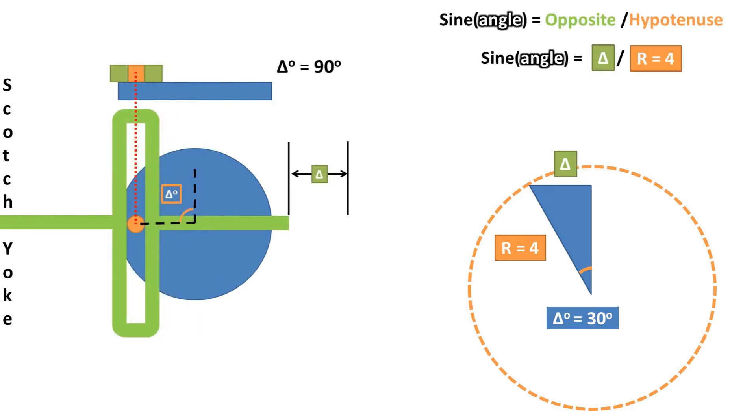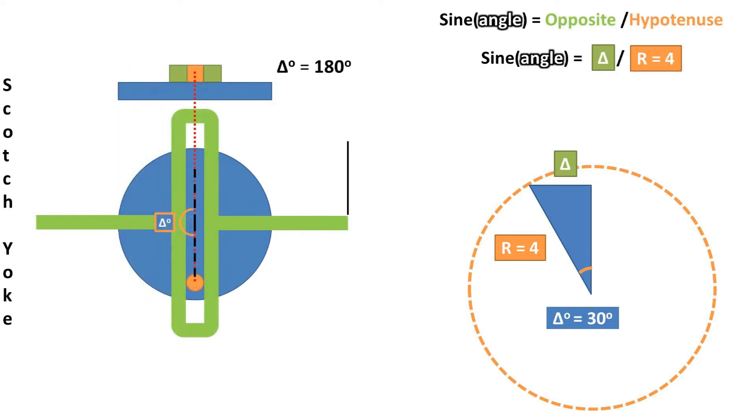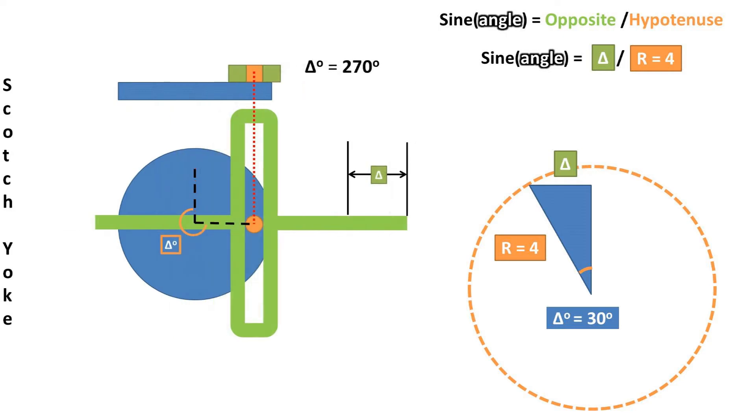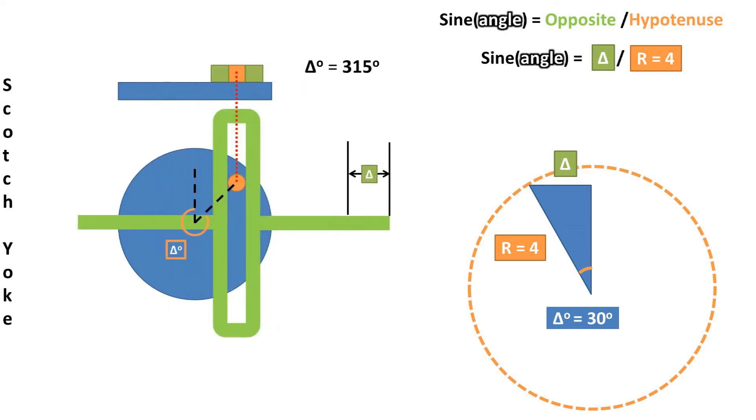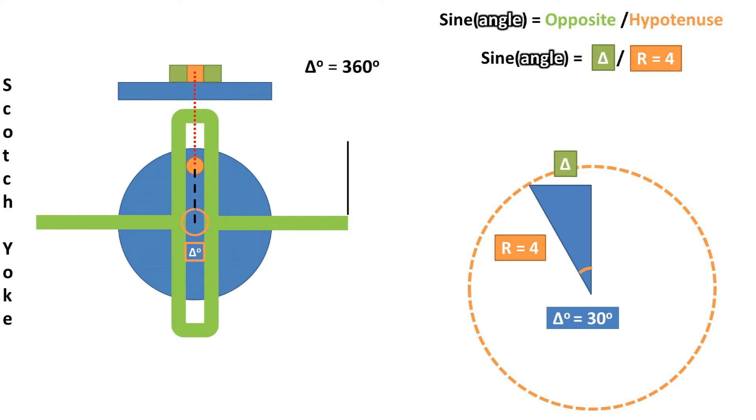We are dealing with the side length opposite, which is the linear distance of the yoke, and the hypotenuse, which is the radius of the path, and this makes a right triangle, or a triangle with one 90 degree angle.